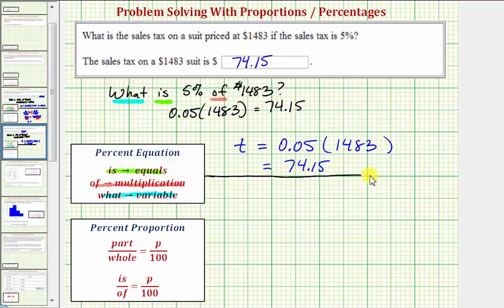Let's also set this up using the percent proportion. The percent proportion is always in this form here where this denominator is always 100. And because we're given the percent and we know a percent is a number compared to 100, the five goes over the 100.